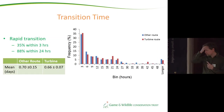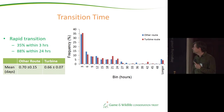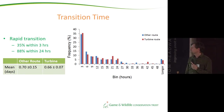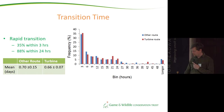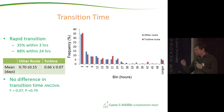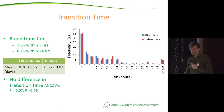Looking at transition time, the majority of smolts made a rapid transition: 35% completed the 3.5-kilometre journey within three hours, and nearly 90% did it within 24 hours. Comparing the blue line — fish using other routes — to the red — fish using the turbine — there was no significant difference in transition time between route choices.